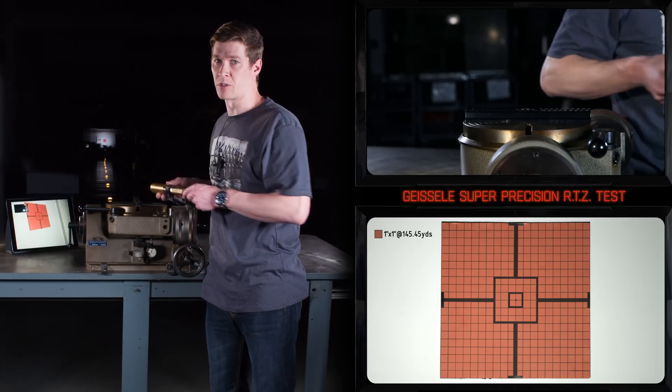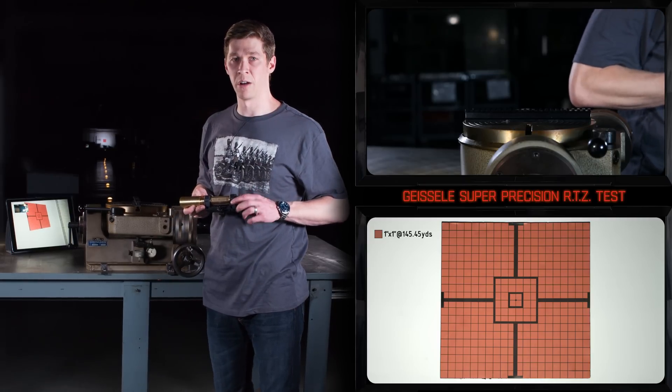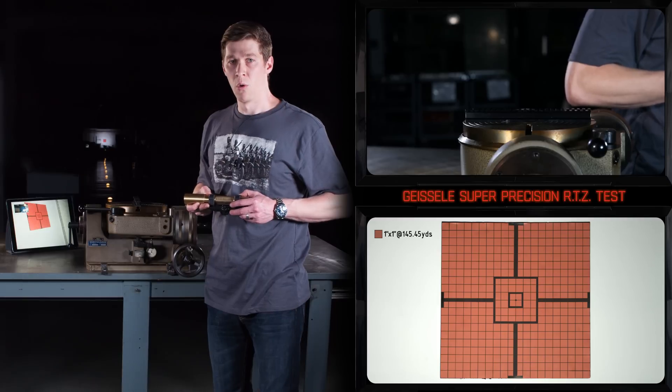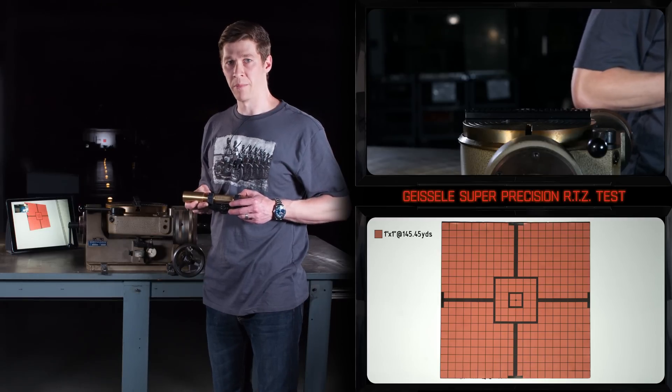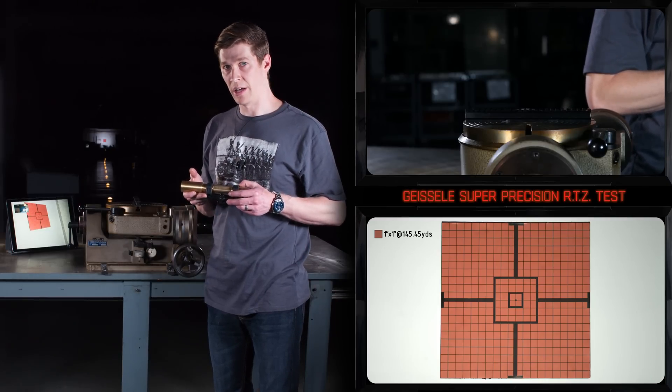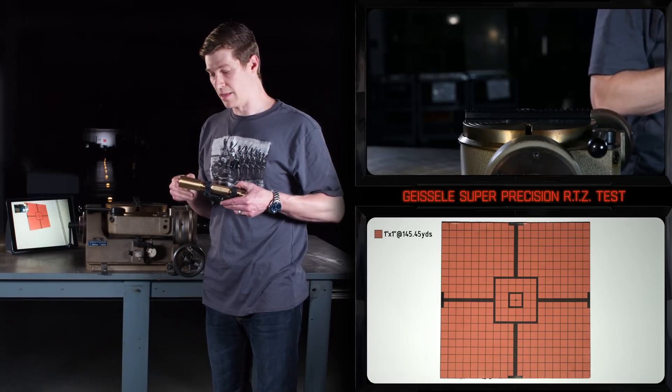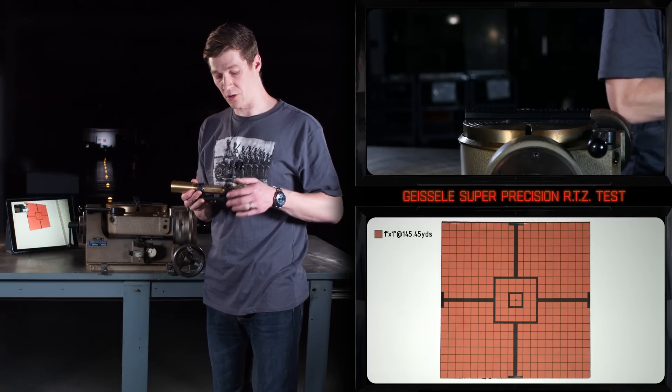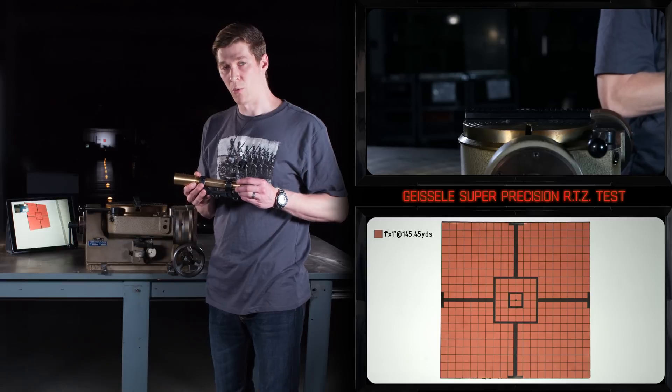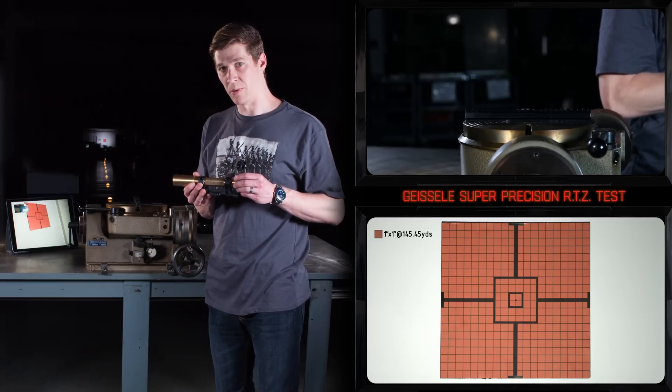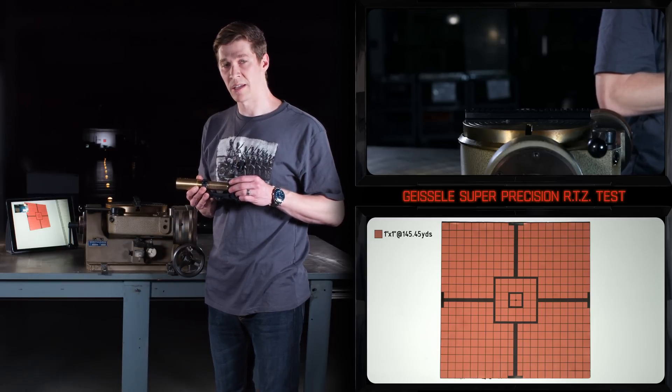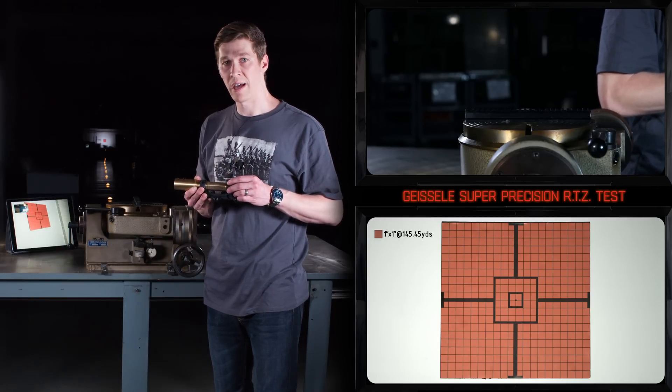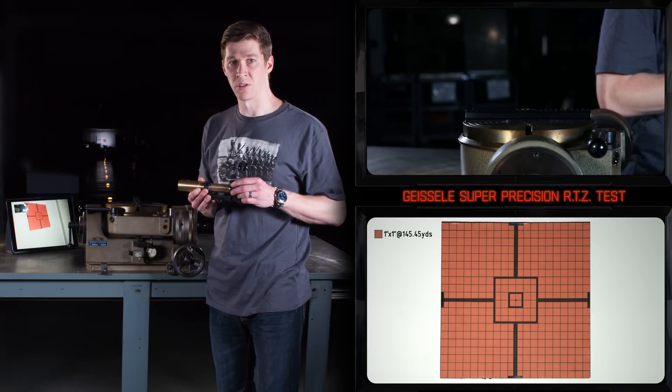Whenever you do any type of empirical testing, you want to eliminate as many variables as possible. We were able to team up with B.E. Myers and they custom made us a laser that is perfectly concentric to this 30 millimeter tube. We're then able to use that tube inside of one of our optic mounts to test our return to zero without the variables you'd face with conventional testing.